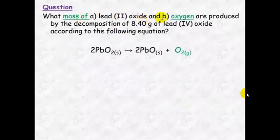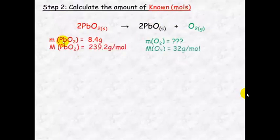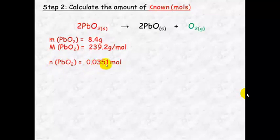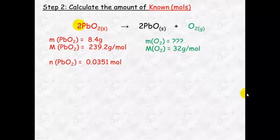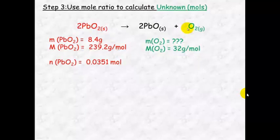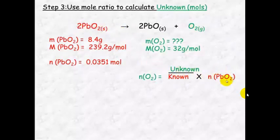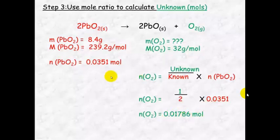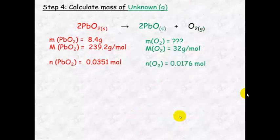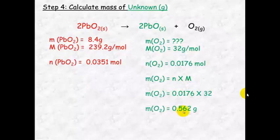Part B asks you to work out the mass of oxygen, so oxygen is now your unknown and our known stays the same. We've already worked out the number of moles of the known: 0.0351 mol. We have a new mole ratio — it's a 2 to 1 ratio. So unknown over known is 1 divided by 2 times 0.0351, which equals 0.01786 mol. Does it make sense? With a 2 to 1 ratio, we should have double the amount of lead oxide compared to oxygen — which we do. Using n times M, the mass equals 0.562 grams.